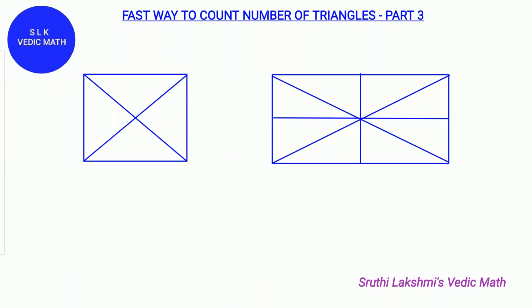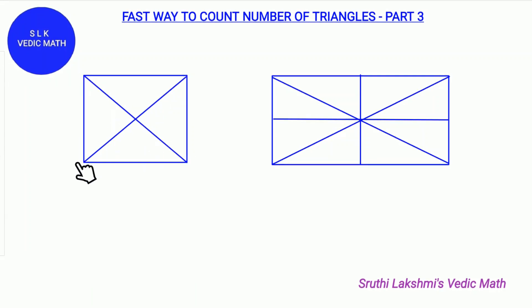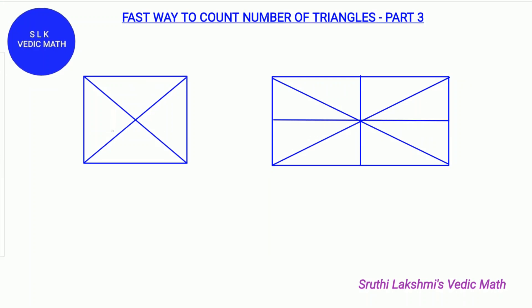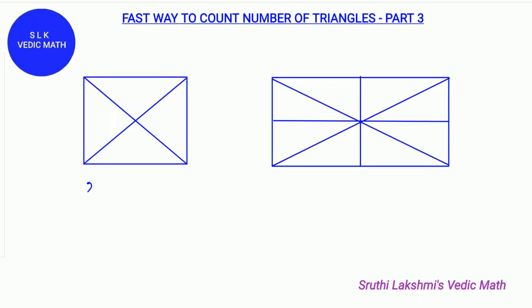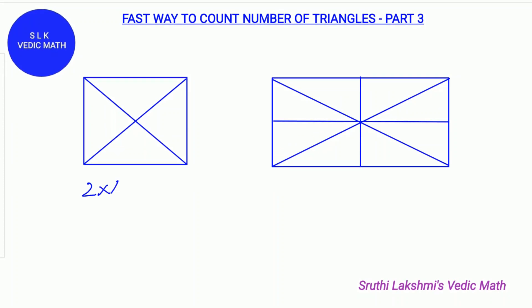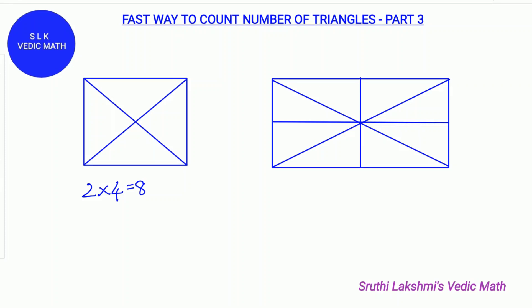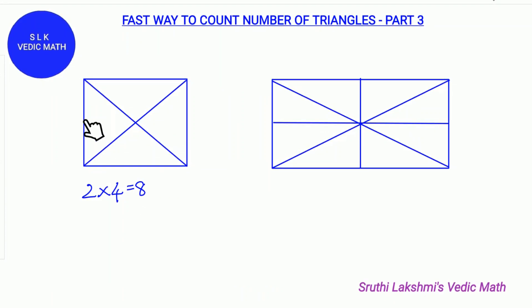Let's see the first figure. In this first figure, there are two diagonals, one diagonal and two diagonal. And there are four parts: 1, 2, 3 and 4. So we apply 2 into 4. 2 into 4 is 8. So there are 8 triangles in this square.